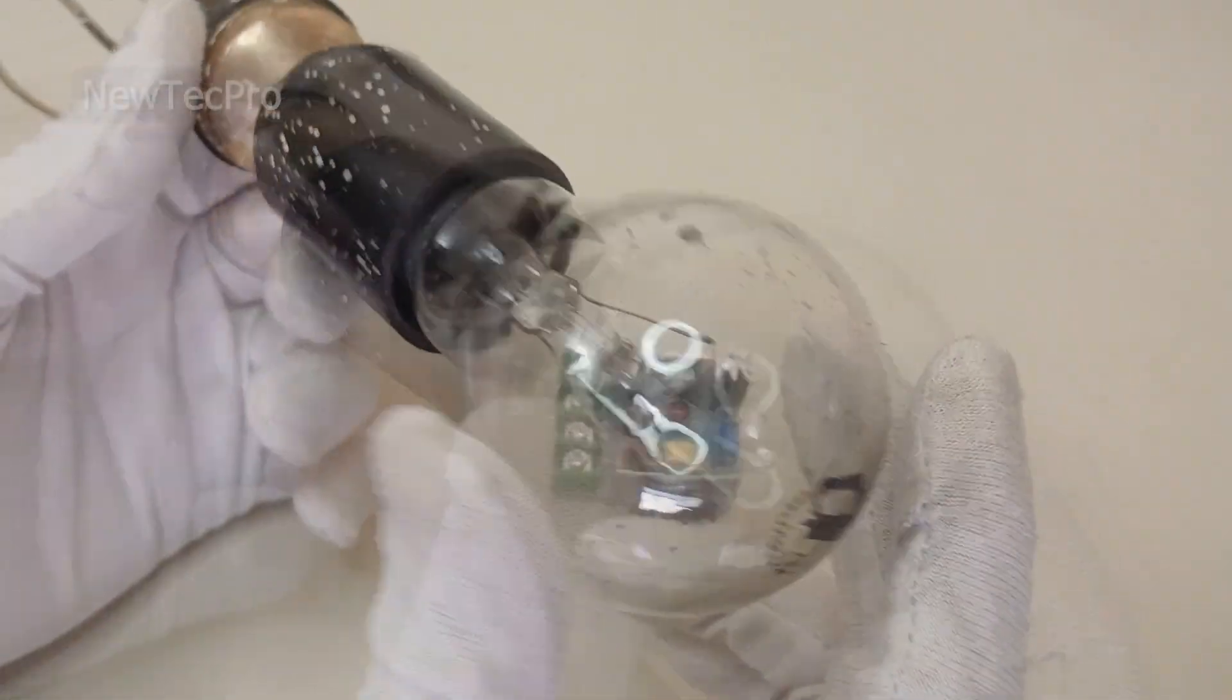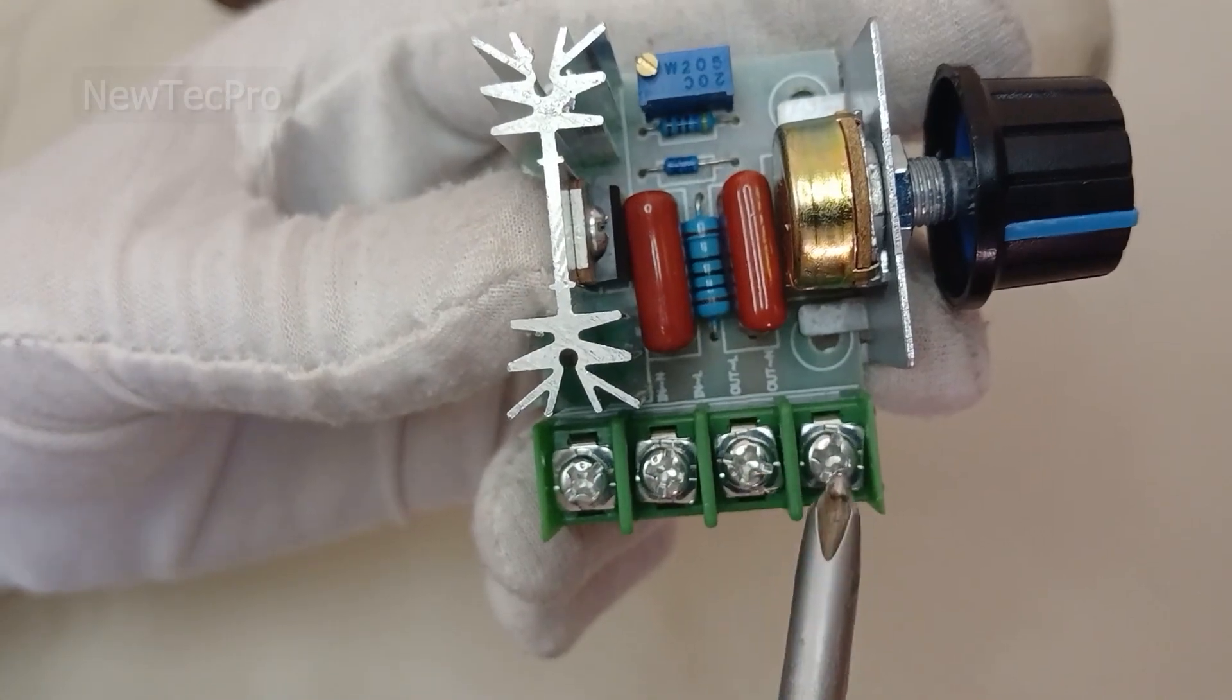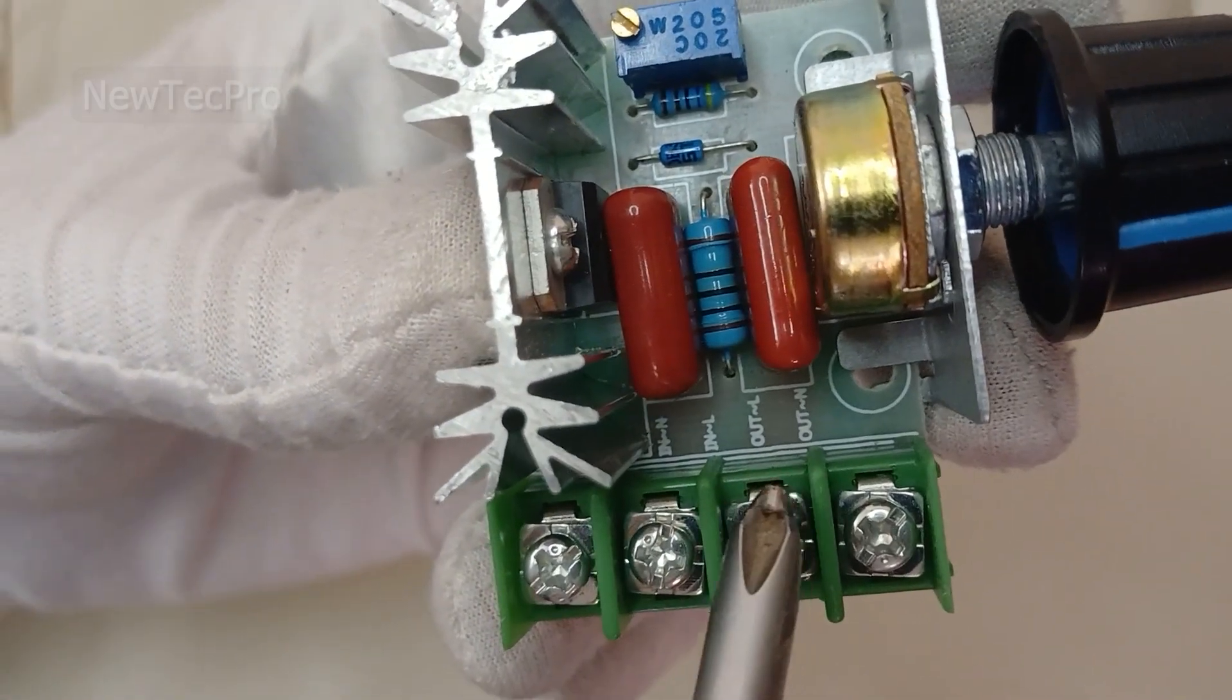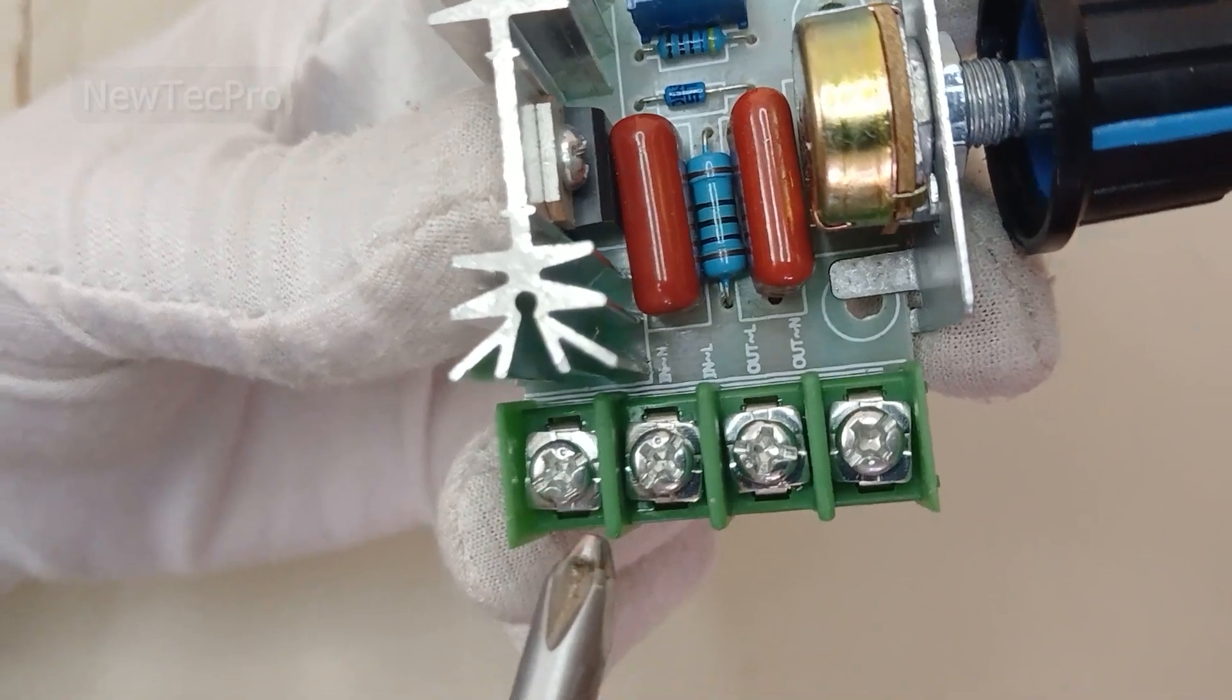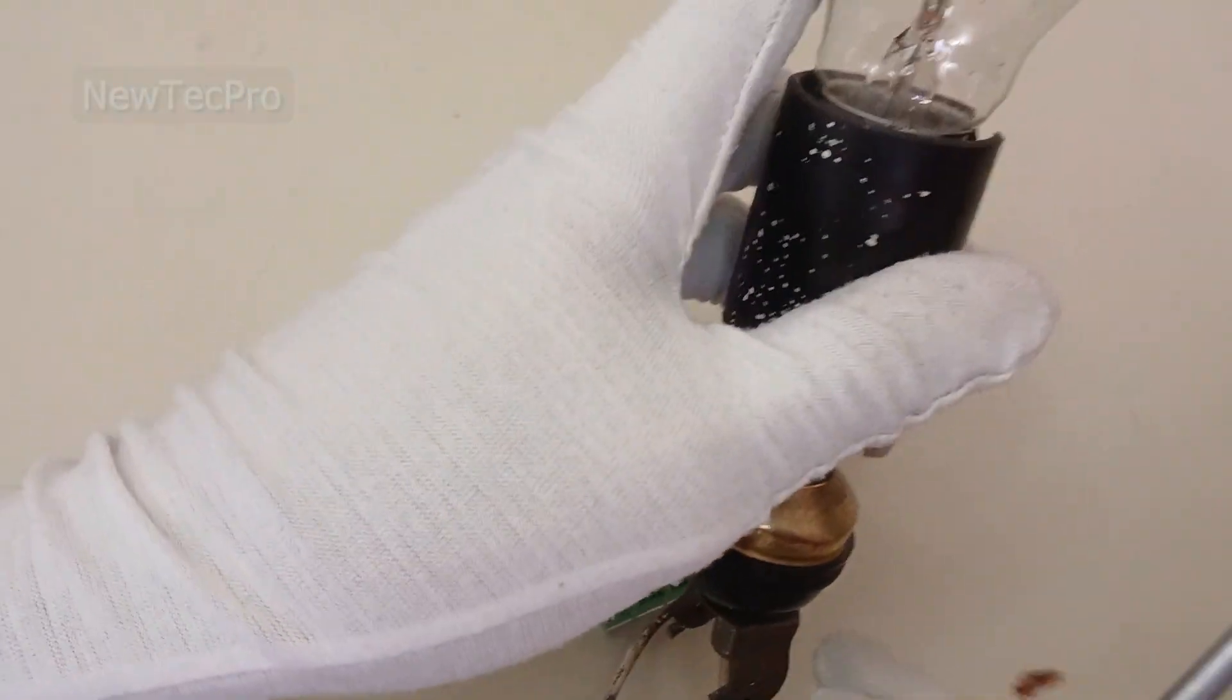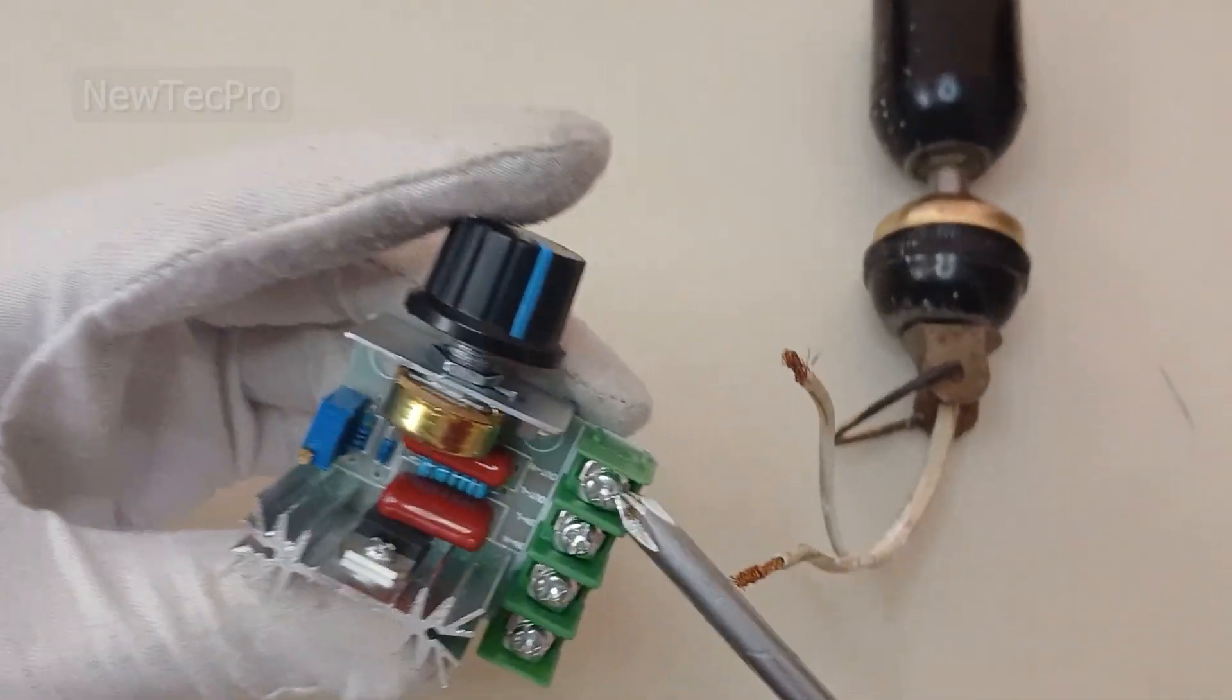As you can see here, these two terminals are the output and these two terminals are the input. Connect the output to the bulb wire - bulb wire to this output terminal.